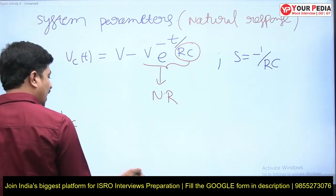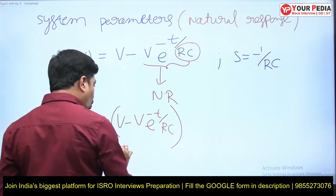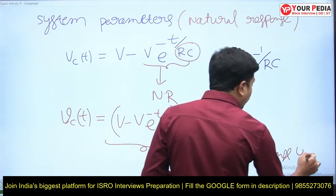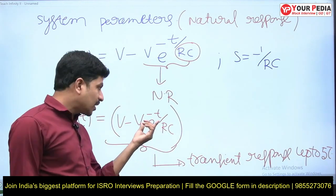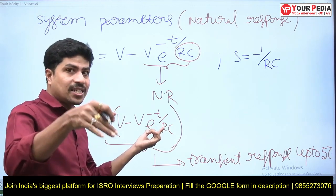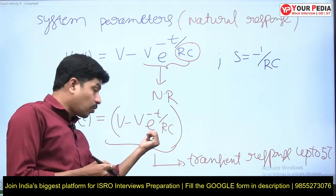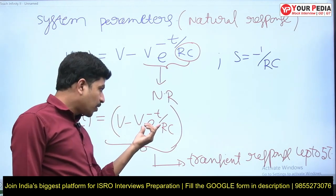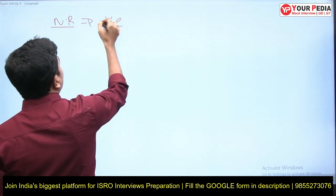Now what is the transient response? The entire VC(t) = V - V·e^(-t/RC) — this total response — is called the transient response up to approximately 5 time constants (5τ), depending on the accuracy required. As time increases, the significance of the natural response decreases. The transient period is the period during which the natural response still has significance. Transient response is the total response — the combination of natural response and forced response — up to 5τ.